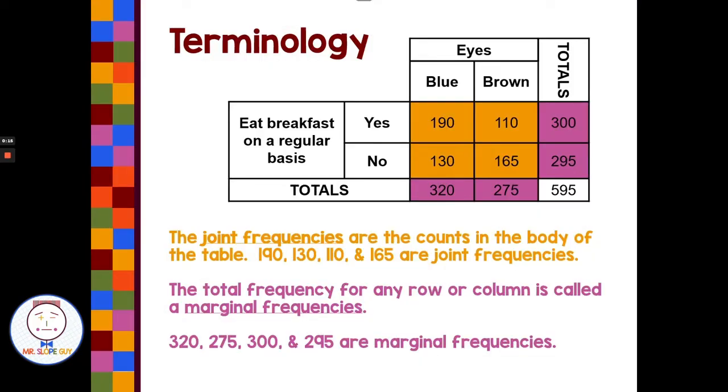Let's first start with a little terminology. We have a two-way table or what's called a contingency table here at the top. And we're looking at people with blue eyes versus brown eyes and eating breakfast on a regular basis, yes or no. And so the joint frequency, this verbiage is important to know, joint frequency are the counts in the body of the table. That's the middle of the table here. And that's where we're joining our two variables together. We're joining blue eyes or brown eyes with breakfast or no breakfast. So it makes sense. It's called a joint frequency because we're joining our two variables together here in the body of the table.